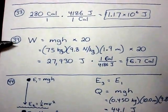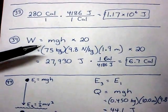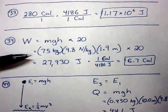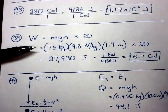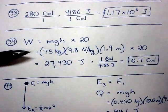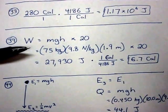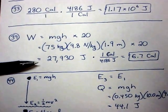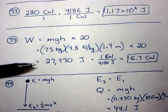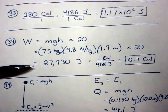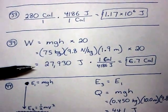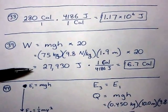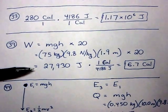So the work done in lifting an object is mass times G times the height. It gives the mass of 75 kilograms times G 9.8 times the height of 1.9 meters. But then we're doing it 20 times. So multiply that by 20. We get 27,930 joules times the conversion of 1 kilocalorie over 4186 joules. And that gives us 6.7 kilocalories.